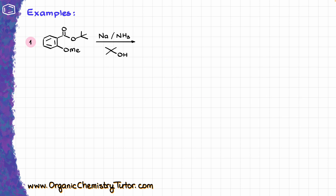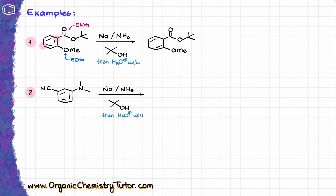But these examples all had only one group on the aromatic compound. What do we do when we have multiple different groups? We need to first analyze what type of groups we have. For instance, in one example I have an electron withdrawing carbonyl and an electron donating methoxy group. Since we are dealing with negatively charged intermediates, we want to prioritize the position of the electron withdrawing group and make sure the sp³ hybridized atoms align with where that EWG is. Likewise, with a nitrile as EWG and an amine as EDG, we again prioritize the EWG position for the sp³ atoms.